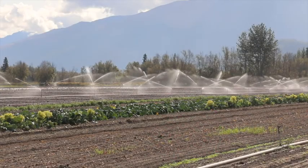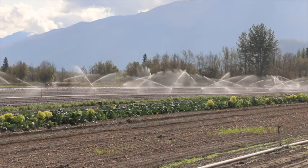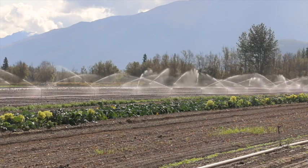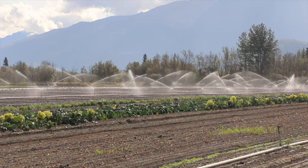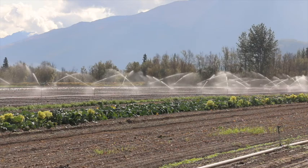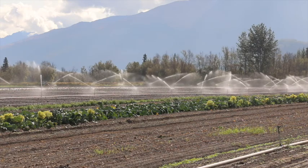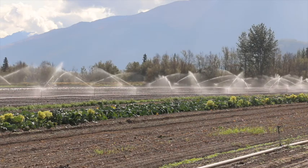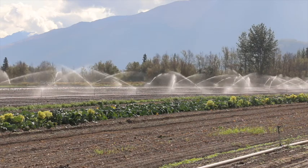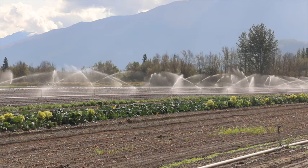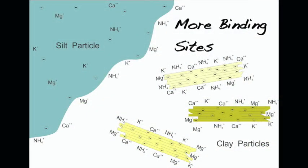Particle sizes are an important aspect of soil because they influence how well soil holds on to water and nutrients. The key is surface area. Water holds on to the surfaces of the particles, so the greater the surface area, the better the soil holds water. Likewise, nutrients bind to the various locations on the surfaces of soil particles, so the greater the surface area of the particles, the better the soil holds nutrients.